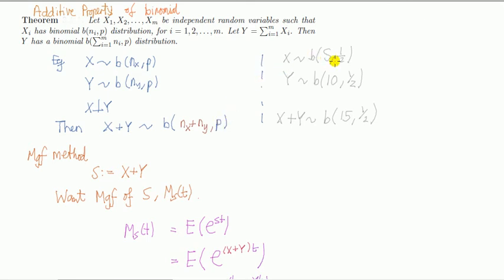For example, if x is binomial with n=5 and p is a half, and y is binomial with n=10 and p is a half, then the new random variable, by adding the two, is going to be also binomial, if they're independent, with n being the sum of these two, so it's 15, and p being the same.